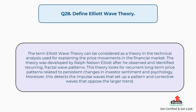Question number 28: Define Elliott Wave Theory. The Elliott Wave Theory is a theory in technical analysis used for explaining the price movements in the financial market. The theory was developed by Ralph Nelson Elliott after he observed and identified recurring fractal wave patterns. This theory looks for recurrent long-term price patterns related to persistent changes in investor sentiment and psychology. Moreover, this detects the impulse waves that set up a pattern and corrective waves that oppose the larger trend.